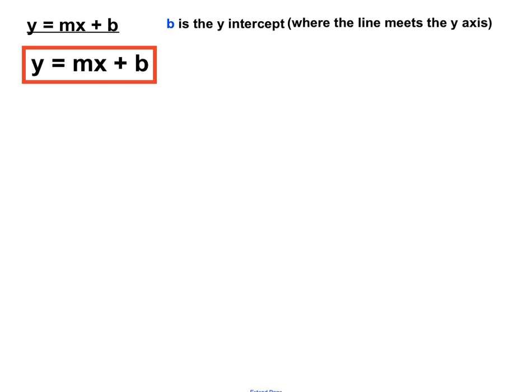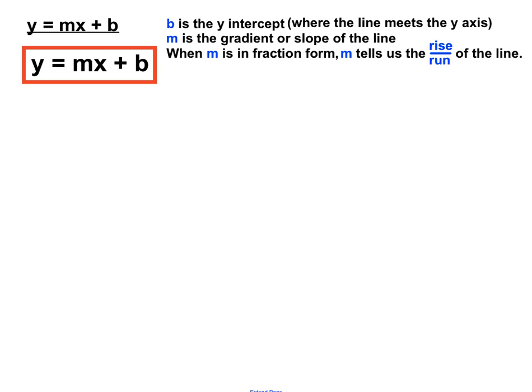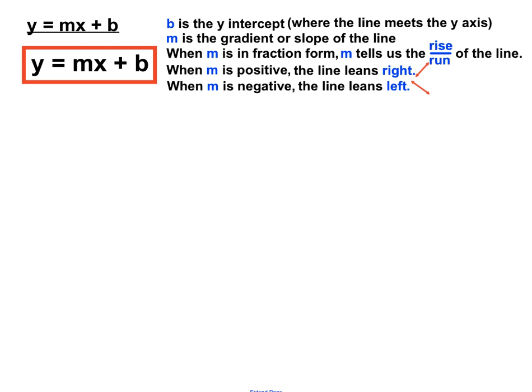Let's briefly recap: b is the y-intercept; m is the gradient or the slope of the line, telling us the rise over run of the line. When m is positive, the line leans to the right, and when m is negative, the line leans to the left. Let's have a look at some examples with real numbers rather than just letters.